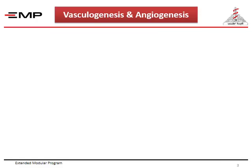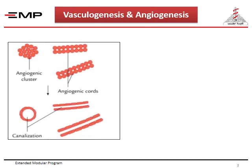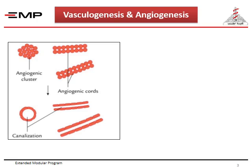Blood vessels are formed by two different processes called vasculogenesis and angiogenesis. In vasculogenesis, mesodermal cells under the influence of vascular endothelial growth factor become differentiated into angiogenic cells. These cells become grouped together to form clusters and later form elongated cylinders. The central cells undergo transformation into blood cells while the peripheral cells form the endothelial lining of the blood vessels. Most of the primitive blood vessels of the body are formed by vasculogenesis.